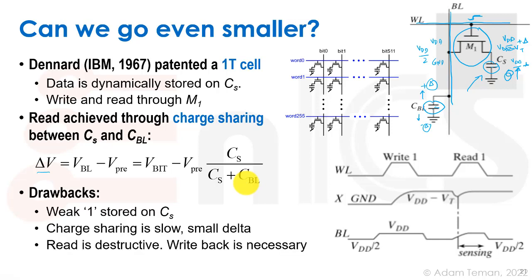The drawbacks of the 1T1C cell are: first, a weak one is stored on CS — we get VDD minus VT rather than full VDD. Second, charge sharing is slow and produces a small delta that is hard to read. Third — something not seen before — the read is destructive. We started with either a zero or VDD minus VT, but after reading we're left with VDD/2 minus or plus delta. So data is lost, and we must write back immediately after reading.